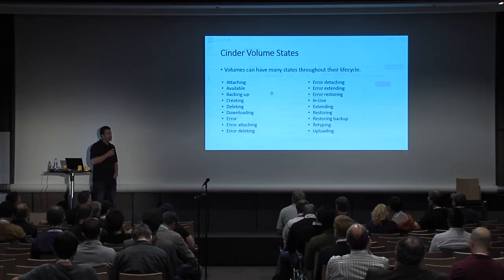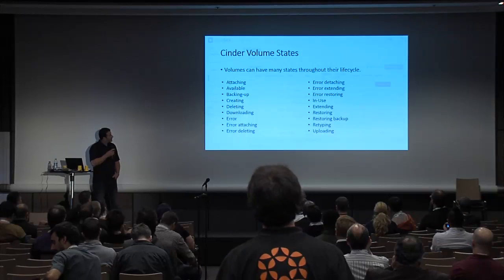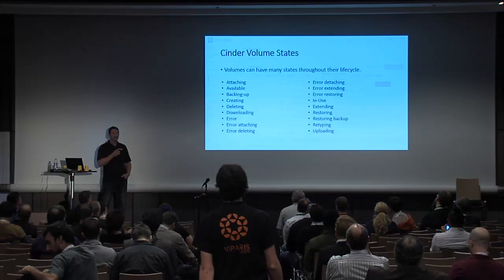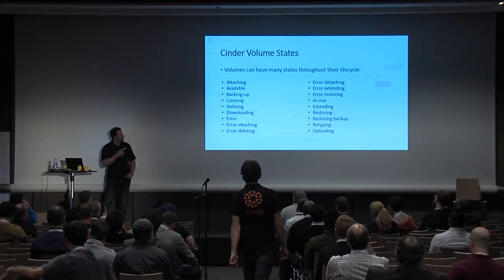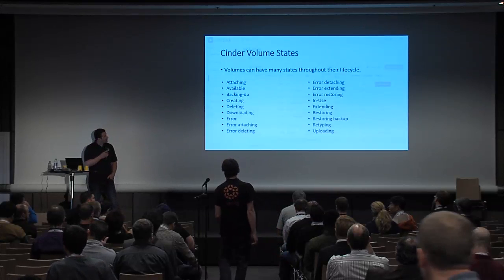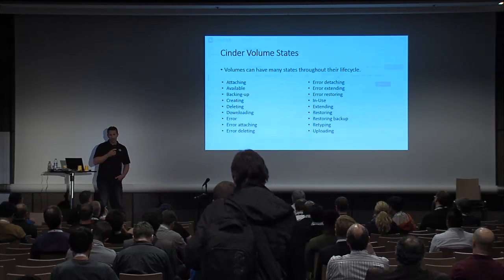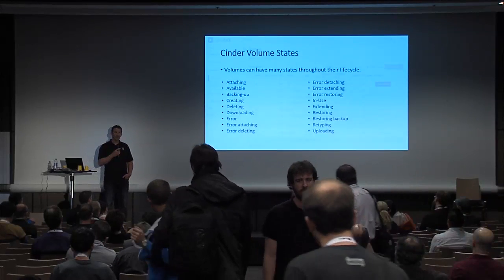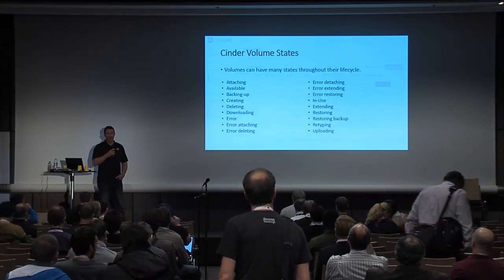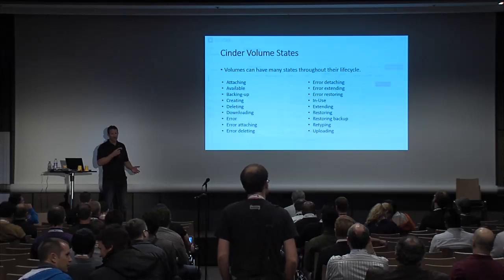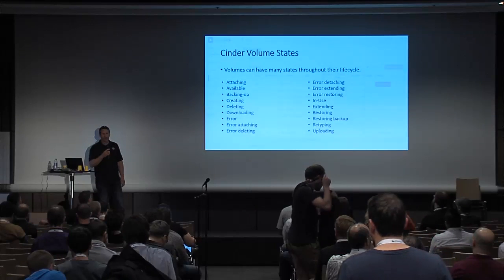There's quite a list of volume states that a volume can move through during its lifecycle. A lot of times you'll just see 'error' in Horizon — what did that exactly mean? We'll give you some hints on where to resolve those issues. Sometimes volumes just get stuck in a particular state — it'll just spin at 'creating.' Where do you look for those types of errors? Or when you go to attach a volume, it will sit in 'attaching' state for a while and then flip back to 'available.' That wasn't successful — where do you look for those errors?